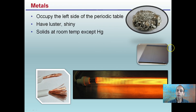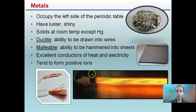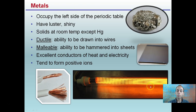The metals in general occupy the left side of the periodic table. They have luster, are shiny, and are basically solids at room temperature except Hg, which is the abbreviation for mercury. Ductile — meaning the ability to be drawn into wires, as we see here with copper — and malleable, meaning the ability to be hammered into sheets. They're excellent conductors of heat and electricity, and they tend to form positive ions. So in general, if you're an element classified as a metal, odds are you share many of these properties.